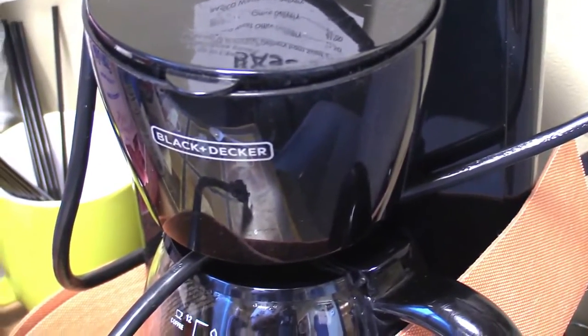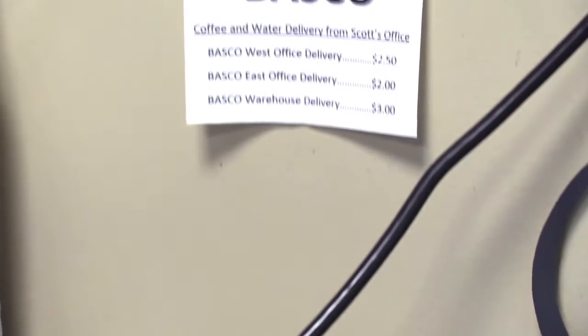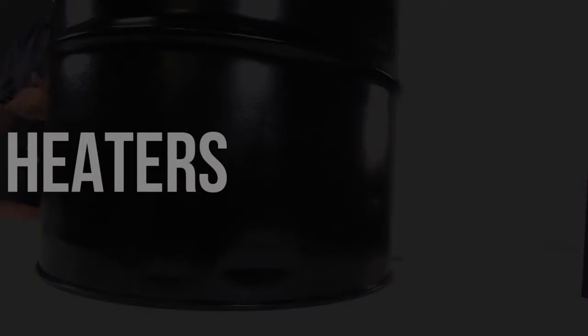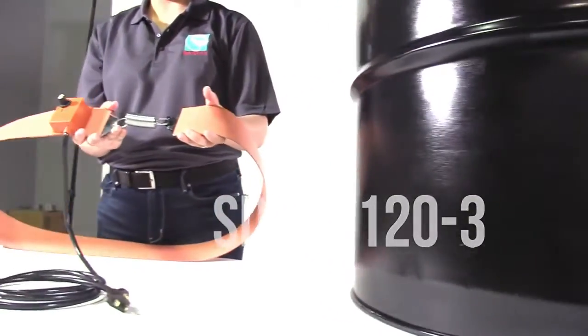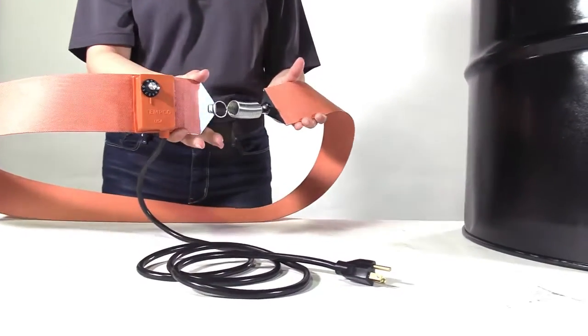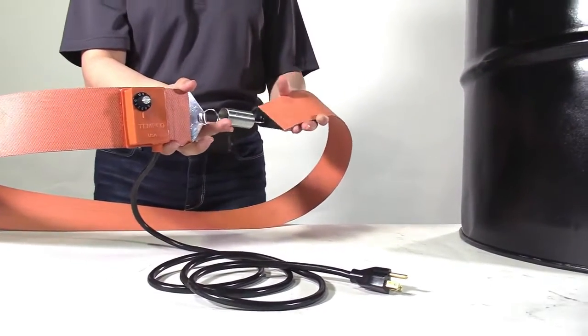Good thing we have can heaters, pail heaters, drum heaters, and IBC heaters because at Basco we get things right. This versatile silicone rubber 55 gallon steel drum heater is complete with an adjustable thermostat and six-foot power cord and plug.